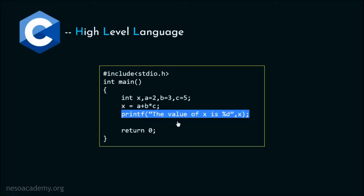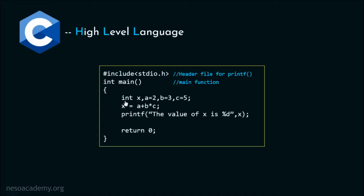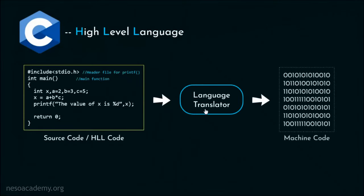If we don't want to print the value of x on the screen, we need not write this line. Finally, here we are returning 0 because the function main is not supposed to return anything under error-free execution. Now if you observe, this piece of code is close to English. Header file is being included using the hash include preprocessor directive, the main function is the main part of the code, integers are given the data type named int, and printing is happening through the printf function. It is in human-readable form but the machine cannot understand it — we usually call it the source code or high-level language code. The job of the language translator is to convert this high-level language code into executable machine code.